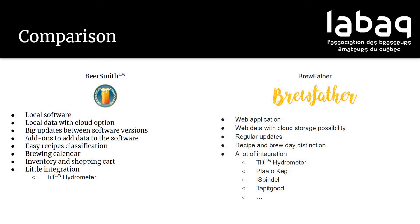Because grain and hops don't wait for new software versions to come to market, what they did is create add-ons so you can add those hops and grains into your software. I found Beersmith easier for classifying your recipes — I'll show you that later. There's a brewing calendar in Beersmith 3 which Brewfather doesn't have right now. Beersmith 3 also has inventory and a cart option, making it easy to manage your inventory and what you need to purchase. Beersmith 3 has started integrating things like Tilt, though it's a bit harder than Brewfather.